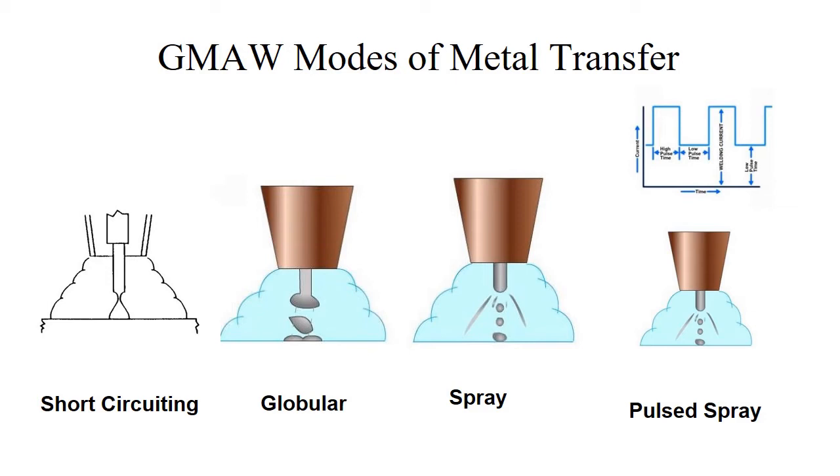There are different ways to get to these different modes of transfer that include but are not limited to wire size, the shielding gas we use, and the amount of current and voltage. These are variables that are going to affect what our gas metal arc welding mode of transfer is.